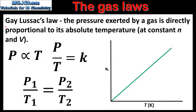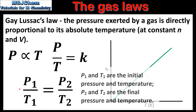The next gas law is the relationship between pressure and temperature at constant volume, also known as Gay-Lussac's law. This states that the pressure exerted by a gas is directly proportional to its absolute temperature in Kelvin. This can be represented as P is directly proportional to T, or P over T equals a constant K. On the right we have a graph of pressure against absolute temperature in Kelvin, showing that pressure is directly proportional to temperature. Gay-Lussac's law can also be represented as P1 over T1 is equal to P2 over T2.